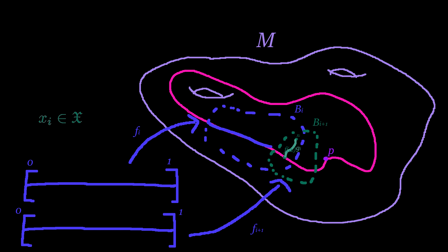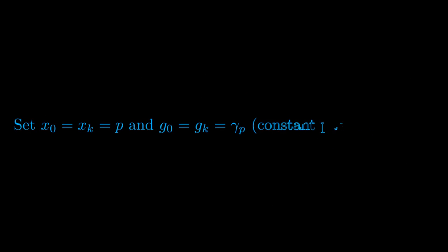Let G_i be a path in B_i intersection with B_{i+1} from x_i to f(a_i), with the understanding that x_0 and x_k will just be equal to the base of our path P, and g_0 and g_k will thus be the constant path based at P.